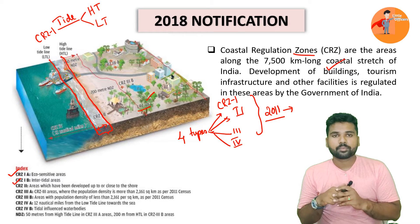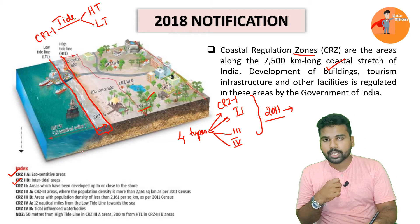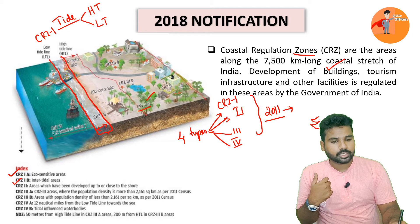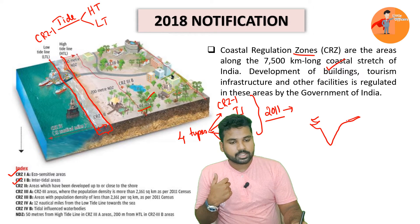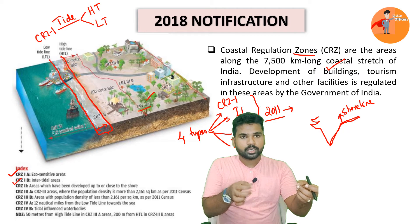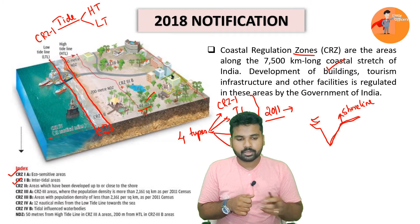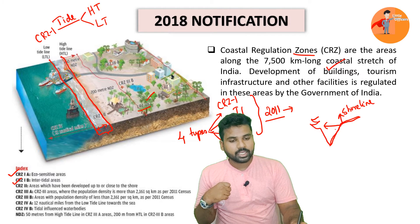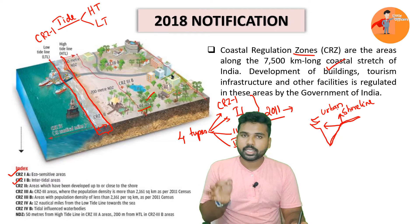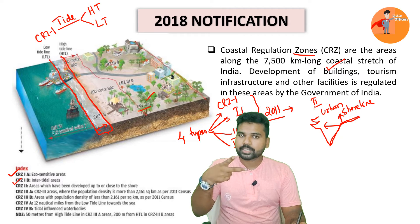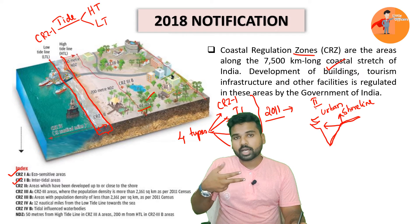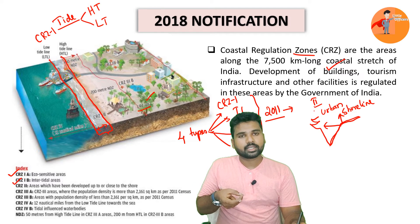This sub-categorisation has been carried forward to the 2018 notification as well. Coming to CRZ2: along the coastline there is a line called the shoreline — the line where the ocean and the land meet. From the shoreline towards the hinterland, whatever areas have urban settlements developed in them are classified as CRZ2. It is important to remember that CRZ2 applies only to urban settlements.